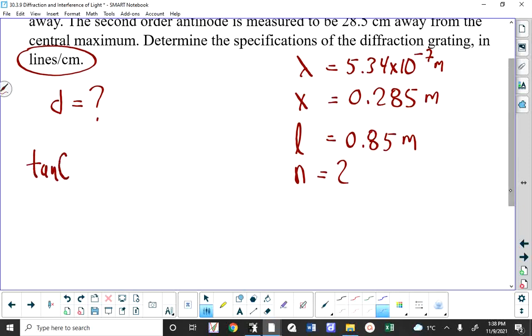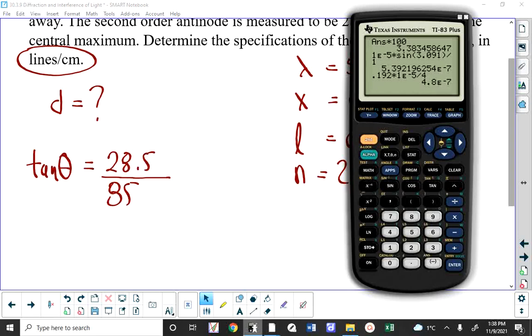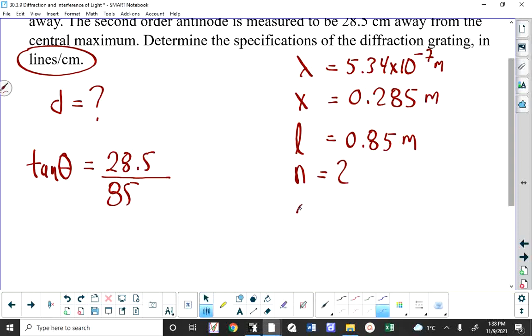So tangent of theta is the opposite side of that triangle, which is 28.5, over the adjacent, which is 85. I don't think it matters if we find the angle using centimeters over centimeters or meters over meters. 18.5 degrees. So we're getting theta equals 18.5 degrees.